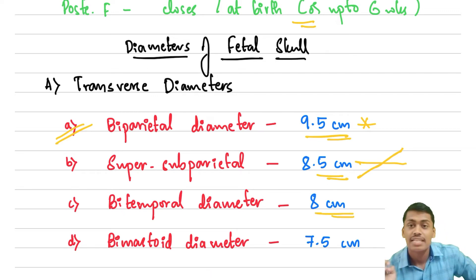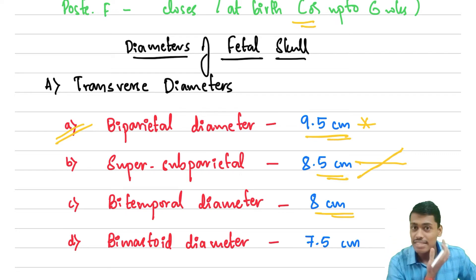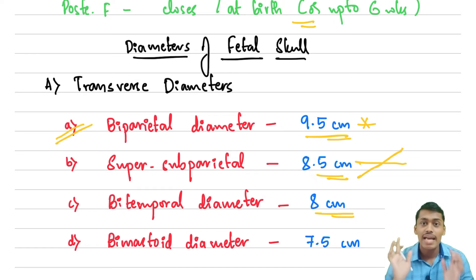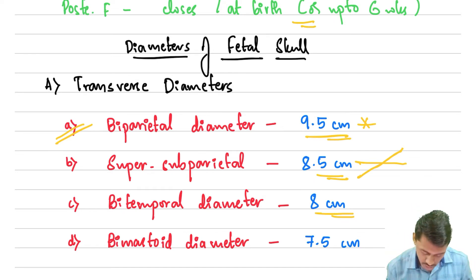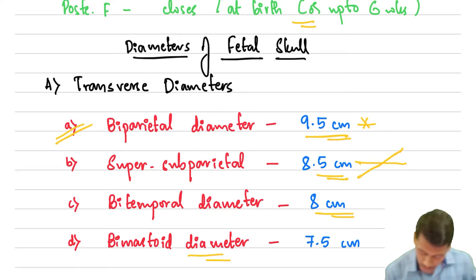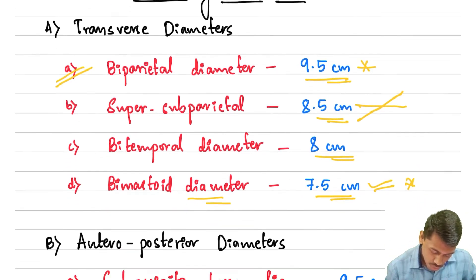Finally, we have the bi-mastoid diameter. We have the mastoid process on the fetal skull on either side, and the diameter between these two mastoid processes is the bi-mastoid diameter. This diameter measures up to 7.5 centimeters. An important feature of the bi-mastoid diameter is that it is incompressible.